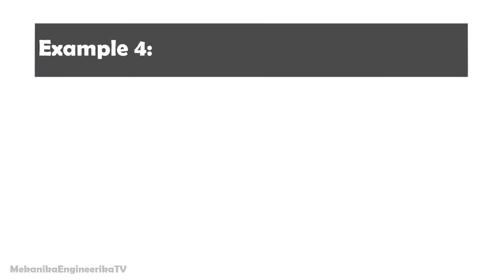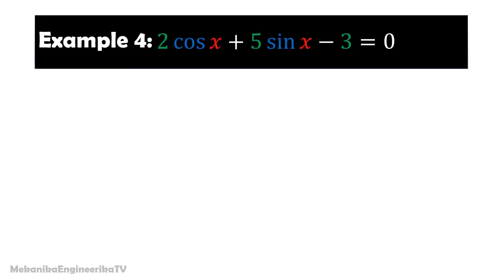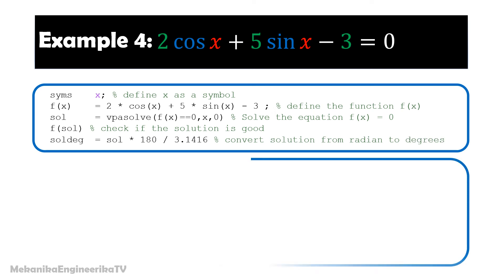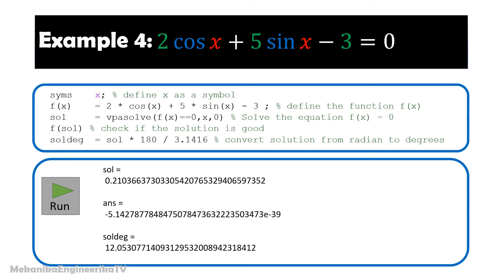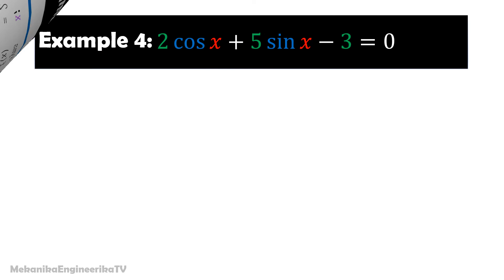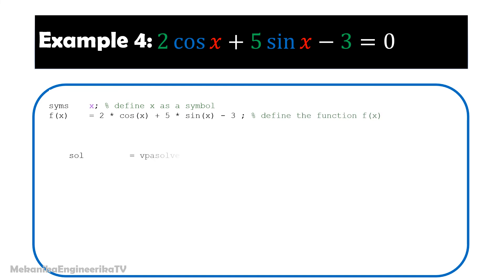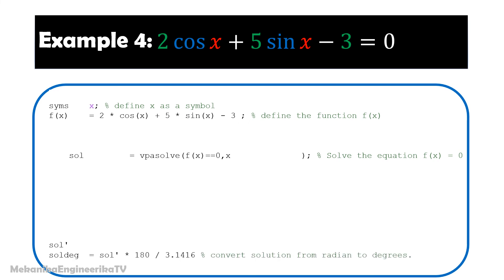The last equation is also non-polynomial and involves trigonometric functions. In terms of coding, we have just modified the expression of f(x). The solution will be in radians by default, so we add a line to convert the solution from radians to degrees. Running the code gives a solution around 0.21 radians or 12.05 degrees. We rewrite the same program: defining x, defining f, calculating the solution with vpasolve, writing the solution, and finally converting from radians to degrees.